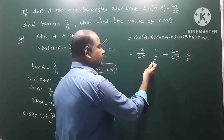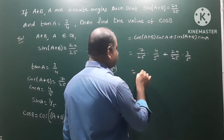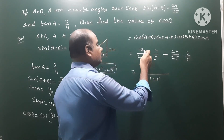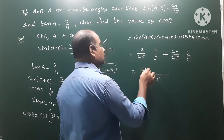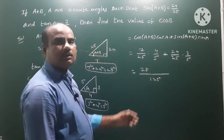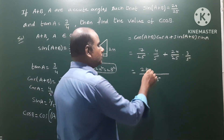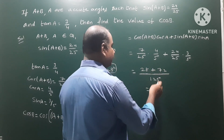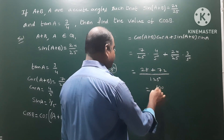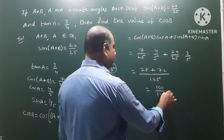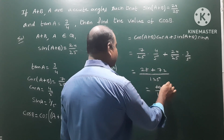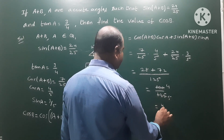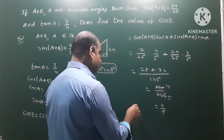Taking LCM of 25 and 5, which is 125: numerator = 7×4 + 24×3 = 28 + 72 = 100. So cos(B) = 100/125 = 4/5. Therefore, cos(B) = 4/5 is the answer.